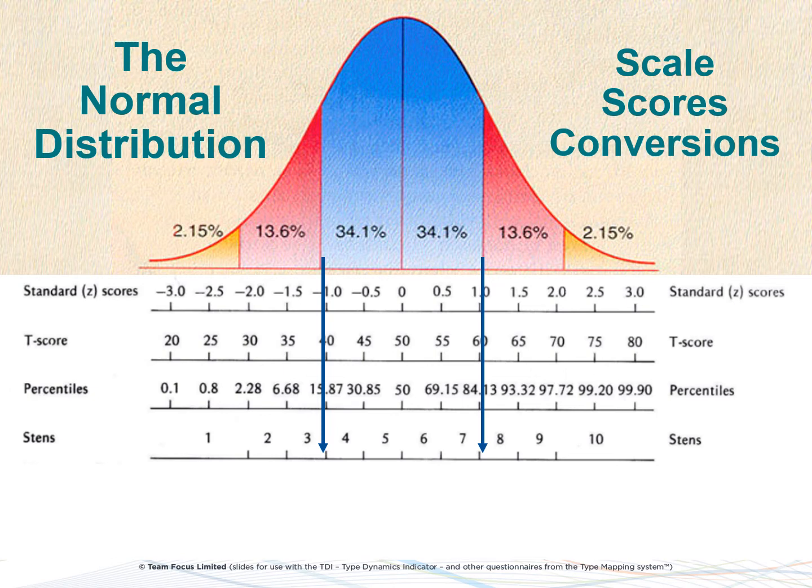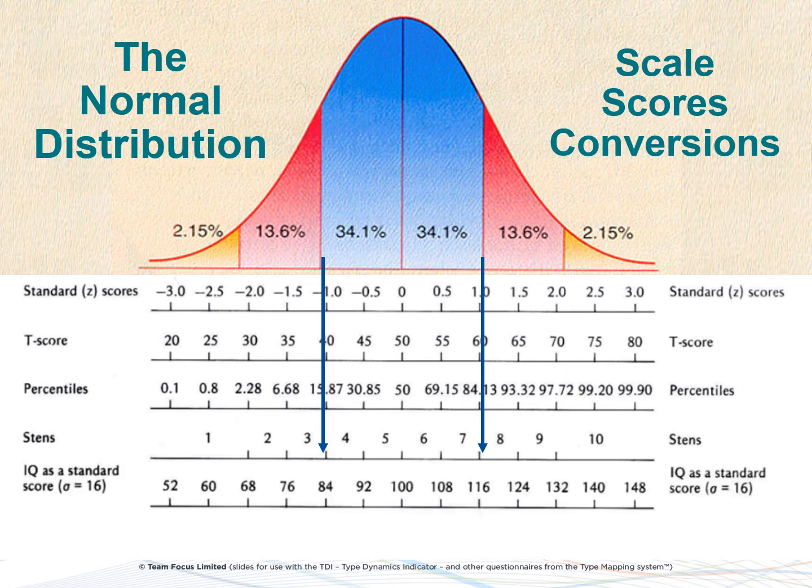Another well-known scale is the IQ scale, but this is not so easy to interpret. The reason for this is that the gradations are sometimes in millimetres and sometimes in centimetres — to use an analogy. So you will need to understand more fundamentally how these scales are derived before you can interpret them accurately. Instead of a 10-point scale, sometimes we have what is called the Stanine scale — a nine-point scale.